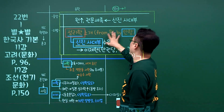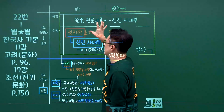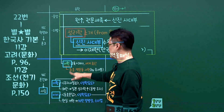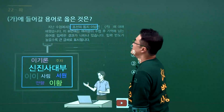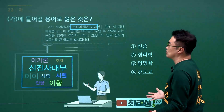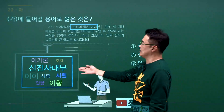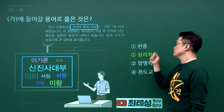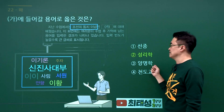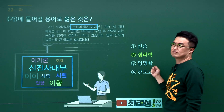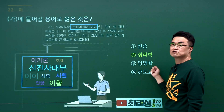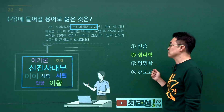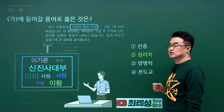신진사대부와 성리학 문제입니다. 안향에 의해 소개된 신진사대부들은 성리학을 공부한 인물들이며 서원, 이황, 이이 같은 인물들입니다. 조선의 통치 이념과 신진사대부와 관련된 용어는 성리학입니다. 선종은 불교, 양명학은 조선 후기 정제두의 강화학파로 유명하고, 천도교는 동학이 이름을 바꾼 것입니다. 정답은 2번입니다.